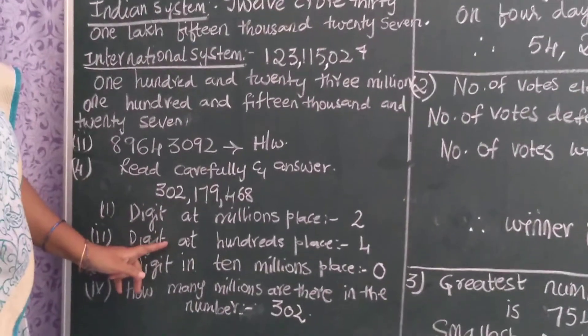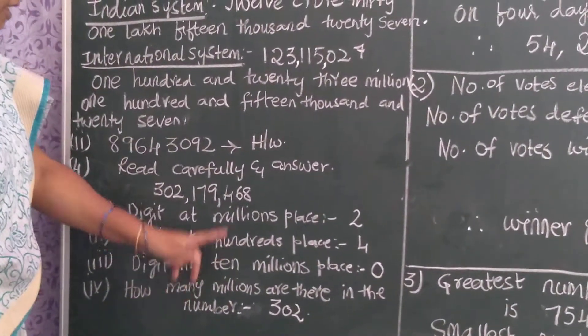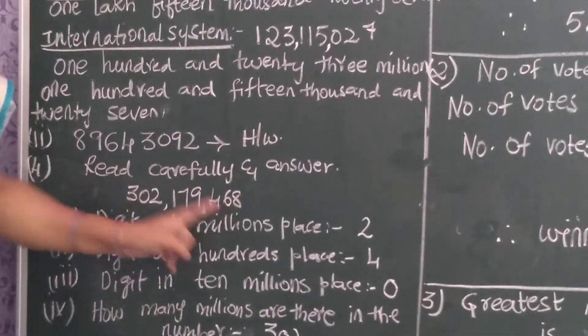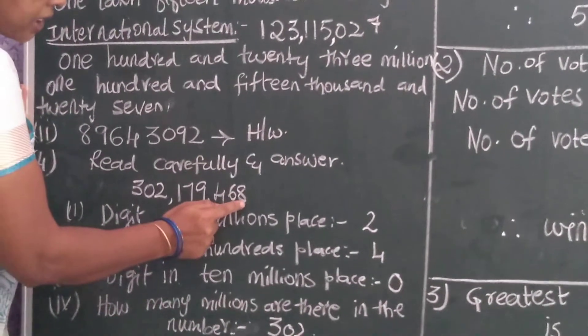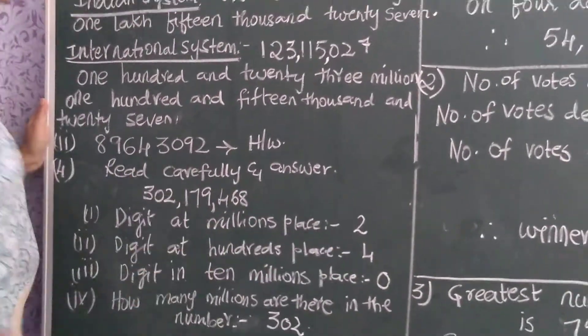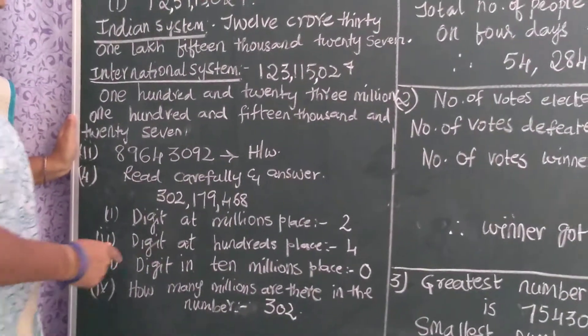Now, digit at hundreds place — what is the digit at hundreds place? The digit at hundreds place is: ones, tens, hundreds. So the digit at hundreds place is four.